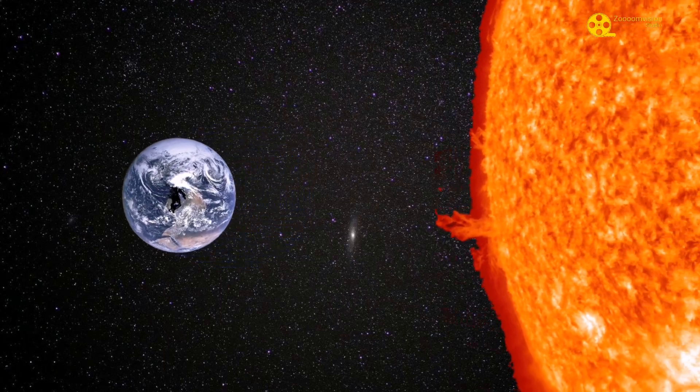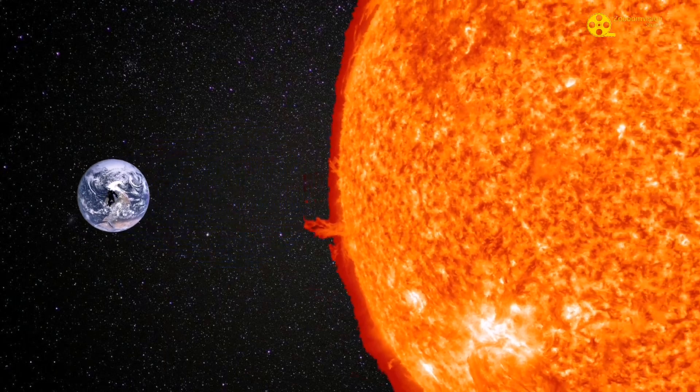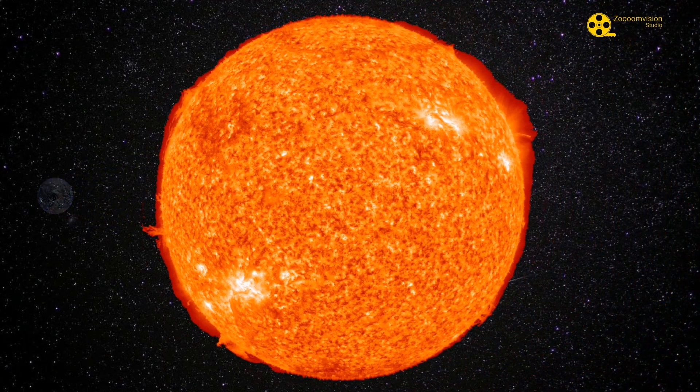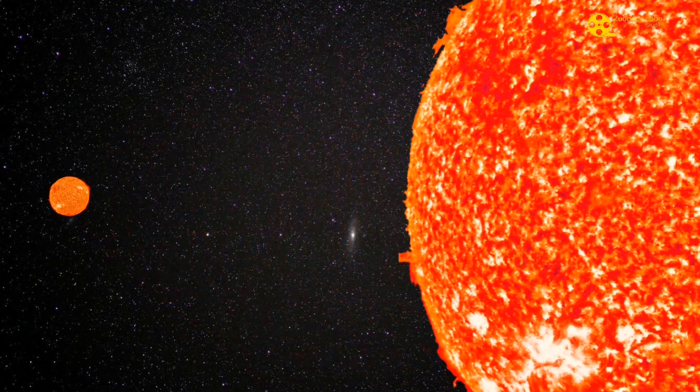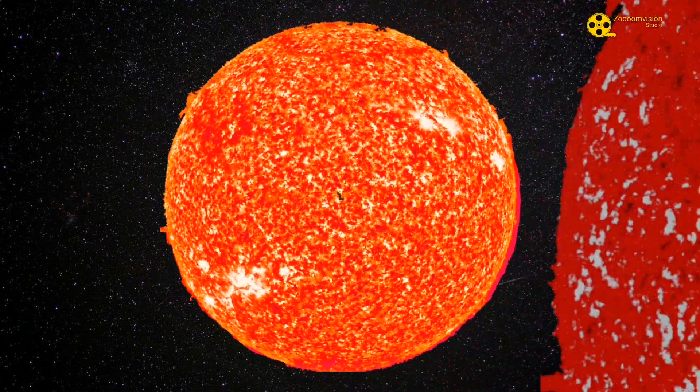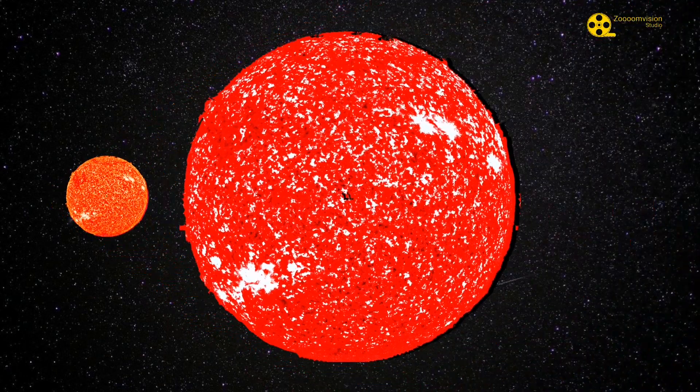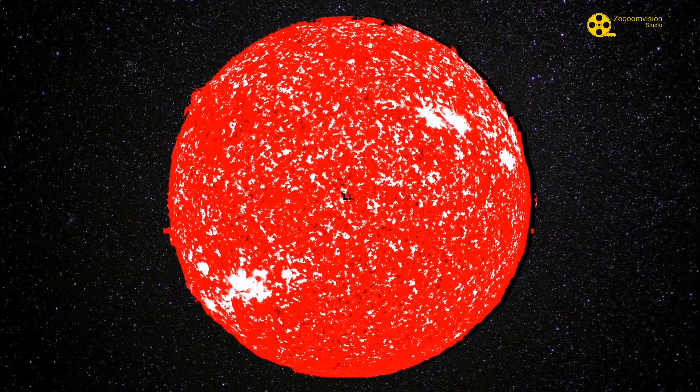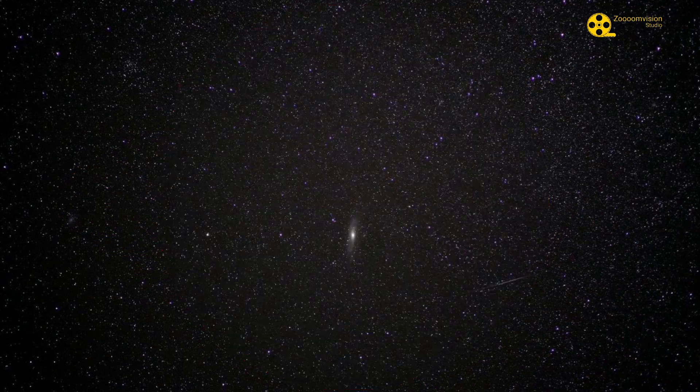If we compare our earth with our sun, it will look like a tiny spot and if we place our sun in front of another star UY Scuti, it will look like a tiny spot as well. But if we place UY Scuti in front of the largest known star, it will also look small. In the recent past UY Scuti was considered the largest known star to us. But now it has been replaced by another super giant.